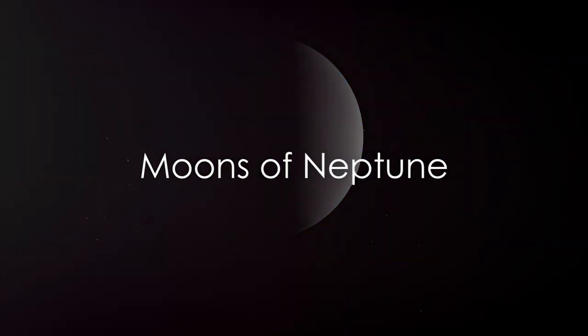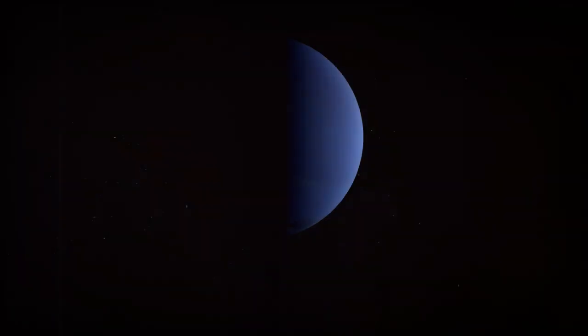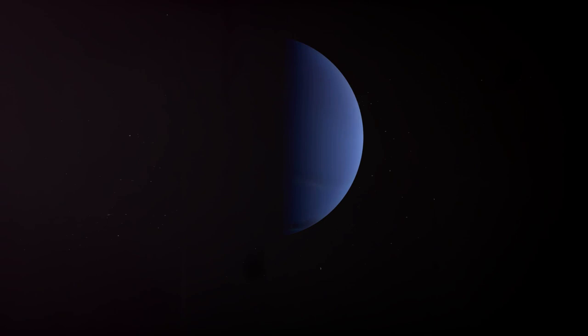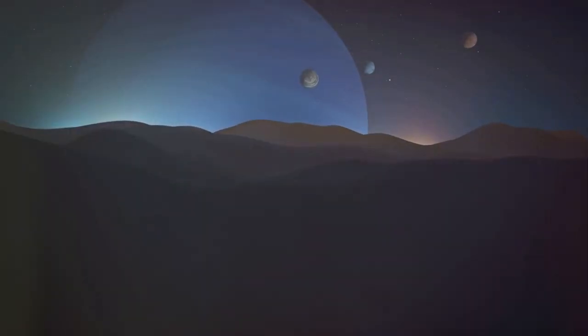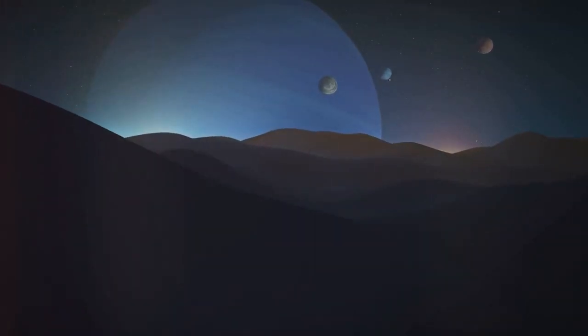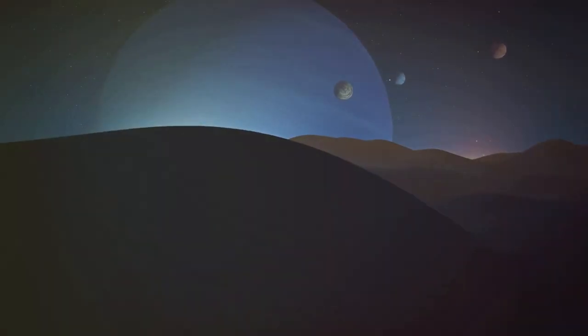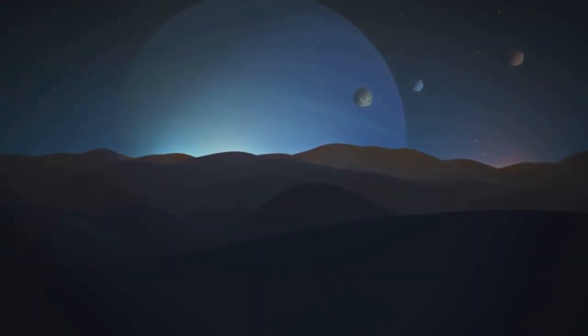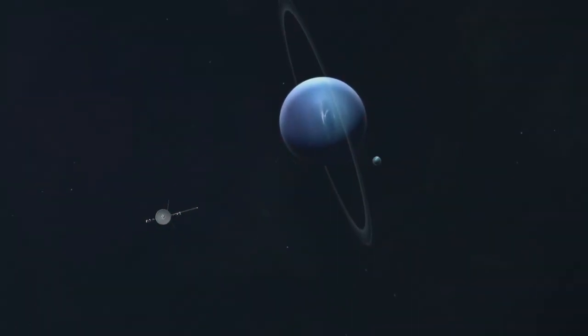Neptune's family is not complete without its 14 known moons. Like the icy rings around the planet, these moons add a touch of mystery to the blue giant. Among them, Triton stands out as the largest and perhaps the most intriguing. Named after the Greek sea god, Triton is about as big as our moon and shines brightly in Neptune's sky. But what makes Triton truly fascinating is its peculiar dance around Neptune.